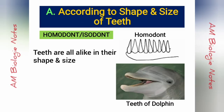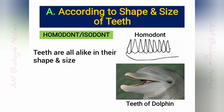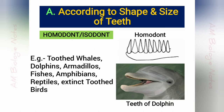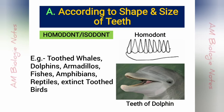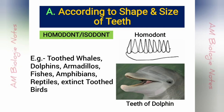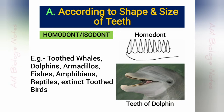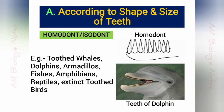Homodont or isodont: In this condition, the teeth are all alike in their shape and size. In certain mammals such as toothed whales, dolphins, armadillos, etc., teeth become secondarily uniform or homodont. In fishes, amphibians, reptiles, and in the extinct toothed birds, the homodont or isodont condition is observed.